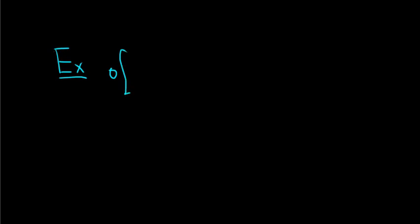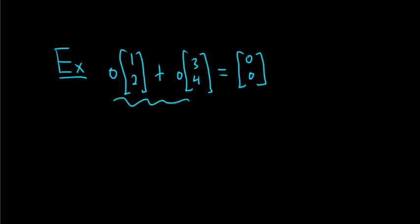Say we have 0 times the vector plus 0 times the vector. This is a trivial linear combination of these vectors. If you set this equal to something you end up with this vector here. So we say this is a trivial linear combination. And the way we'd say it is of these vectors.